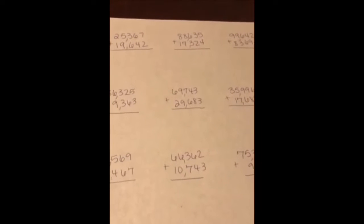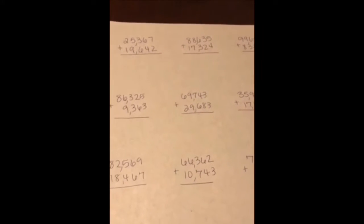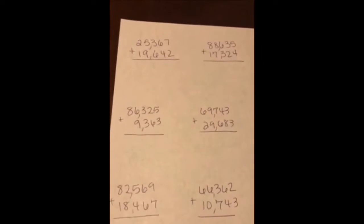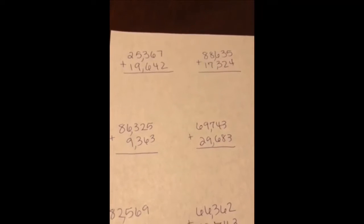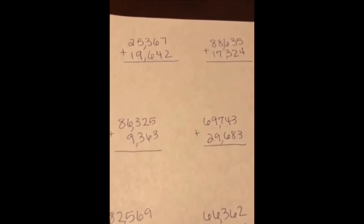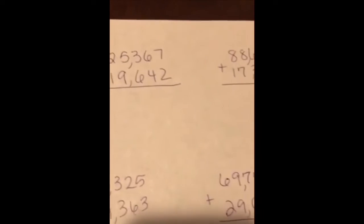Hey everybody, it's Mrs. Wills checking in again with another math fluency strategy for you to practice with your child. This particular strategy is adding five-digit numbers to five-digit numbers or four-digit numbers and checking it with the reverse strategy, which would be subtraction. I will do the first problem for you. We have 25,367 plus 19,642.